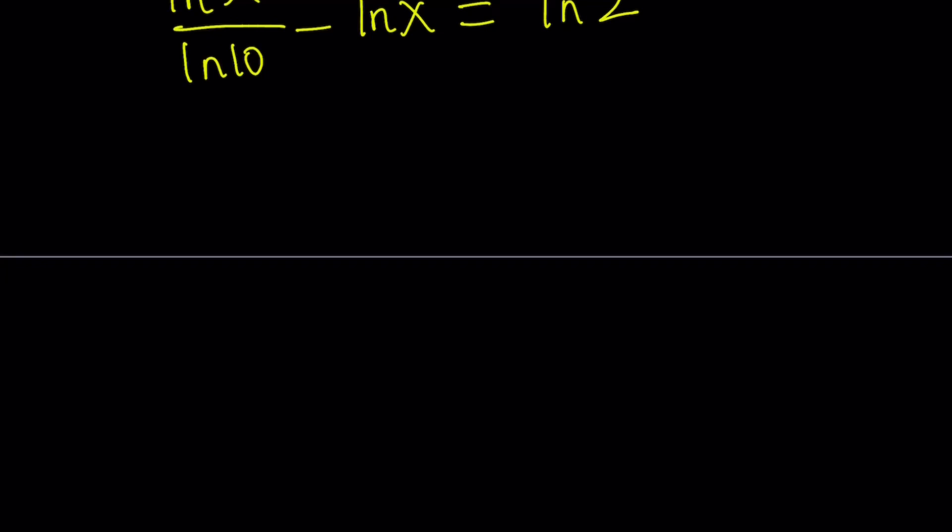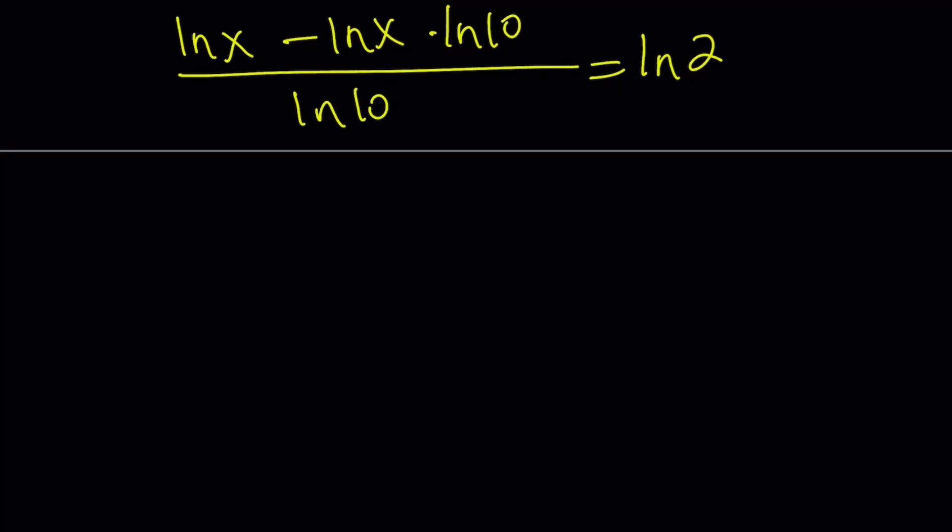We can take out ln x, but let's go ahead and make a common denominator maybe first. ln x minus ln x times ln 10 divided by ln 10 equals ln 2. And then cross multiply.